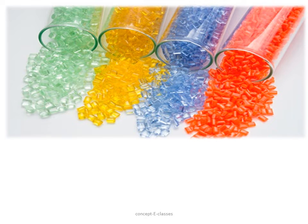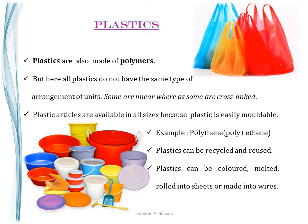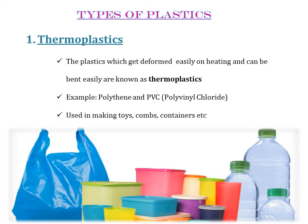Now we will study about plastics. Just like synthetic fibers, plastics are also made up of polymers. However, all plastics do not have the same type of arrangement of units — some are linear whereas some are cross-linked. Plastic articles are available in all sizes because plastic is easily moldable into any shape or size. For example, polythene (poly plus ethene) is commonly used for making polythene bags. Plastics can be recycled, reused, colored, melted, rolled into sheets, or made into wires.